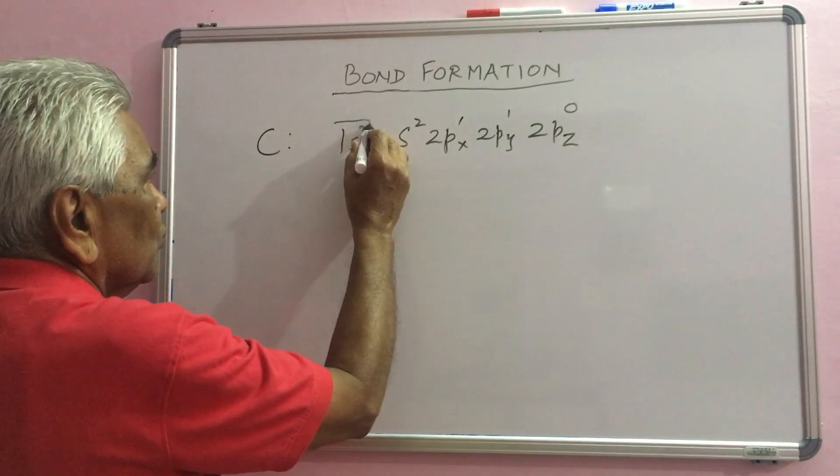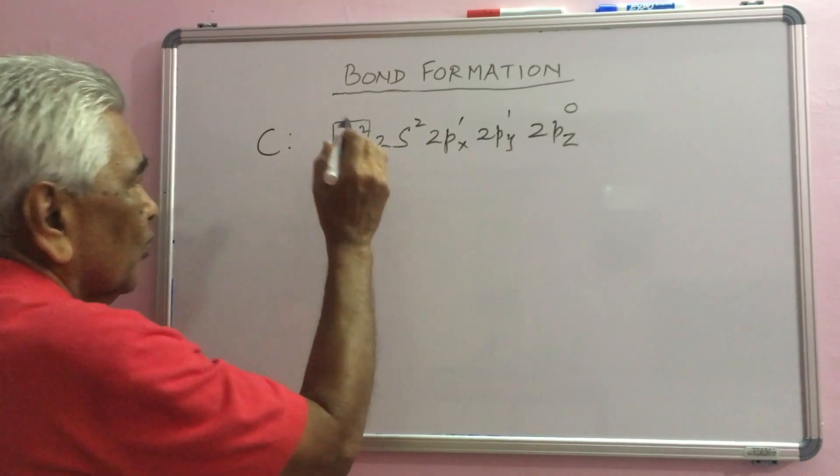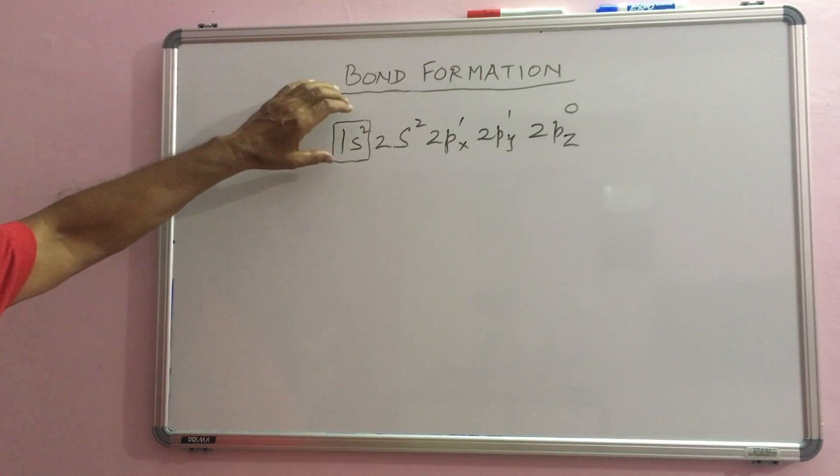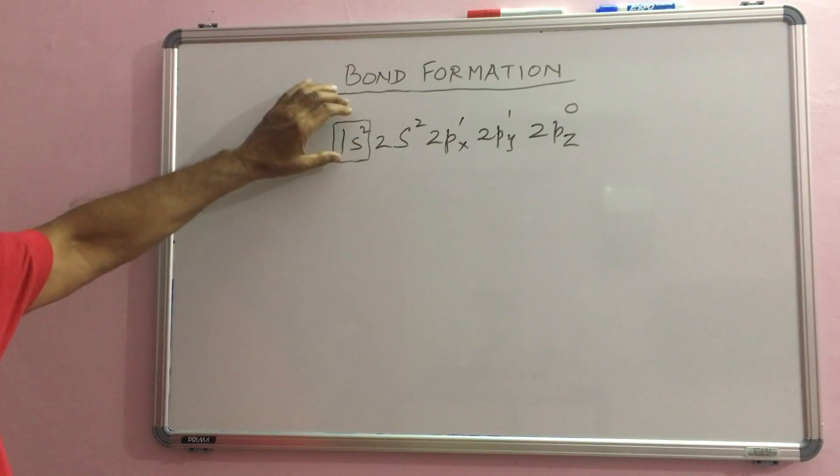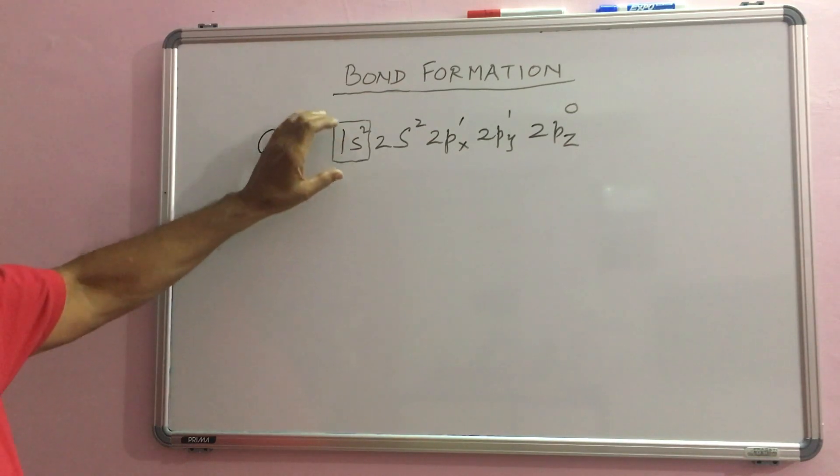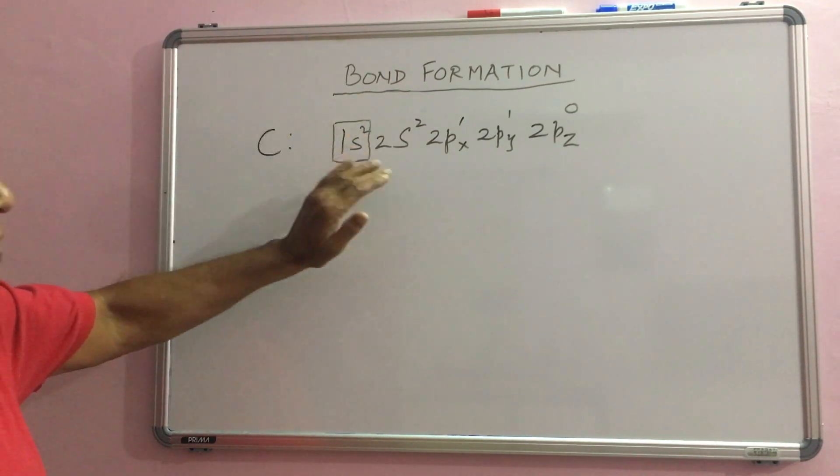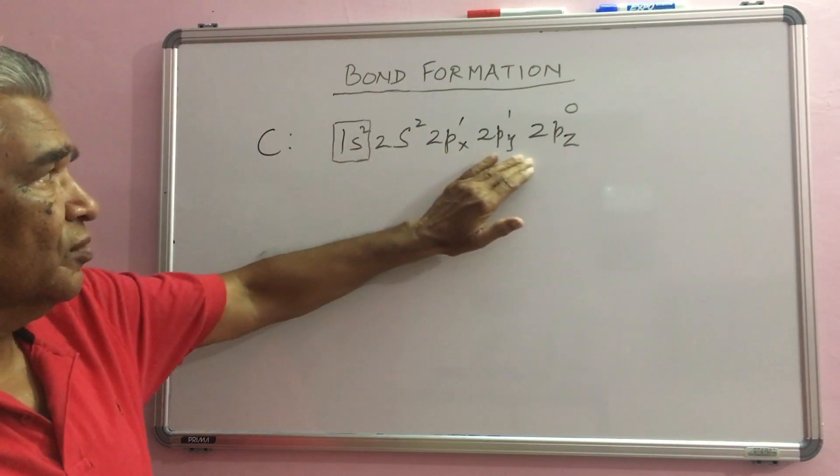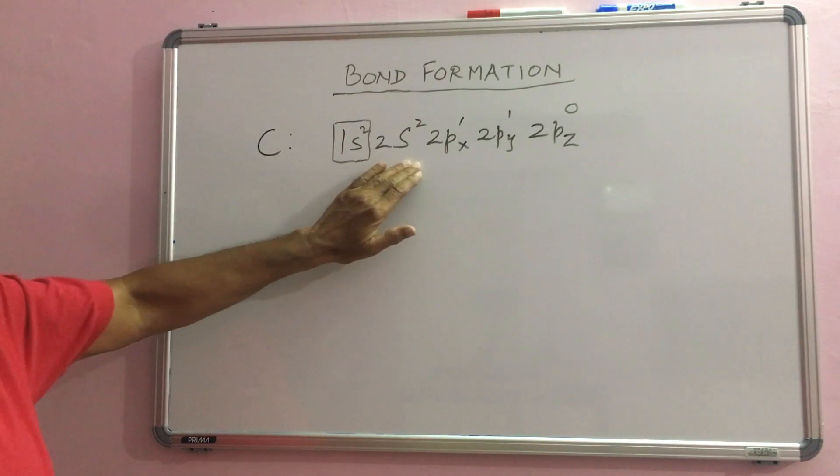These 2 electrons do not take part in any bond formation because this is an inert gas configuration. Outer most shell of helium has filled and this will be a core one. These 4 electrons will take part in bond formation.